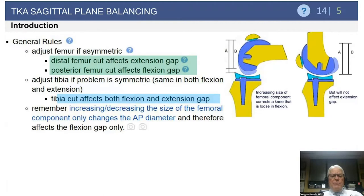General rules to remember — these are very important. You adjust the femur if you have gaps that aren't balanced between femur and tibia. Your distal femoral cut affects only the extension gap. Your posterior femoral cut affects only the flexion gap, whereas your tibial cut is common to both the flexion and extension gap.